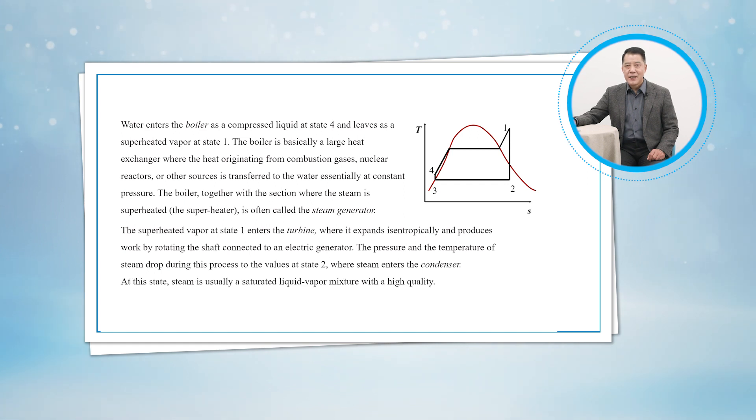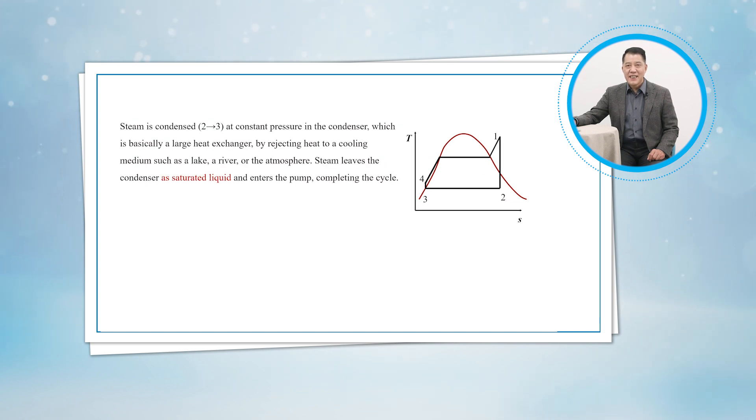At this state, steam is usually a saturated liquid-vapor mixture with a high quality. Steam is condensed at constant pressure in the condenser, which is basically a large heat exchanger, by rejecting heat to a cooling medium such as a lake, a river, or the atmosphere. Steam leaves the condenser as saturated liquid and enters the pump, completing the cycle.